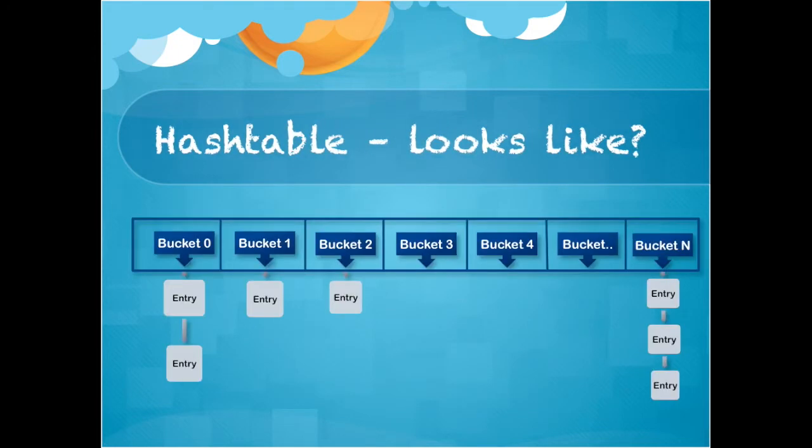Now we will be trying to understand hash table from a pictorial representation. As we can see in this diagram, a bucket can have a single entry or can have multiple entries as a linked list. Here bucket 0 and bucket N have multiple entries.